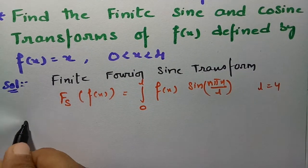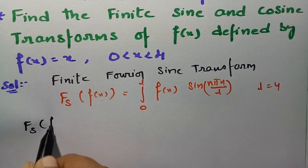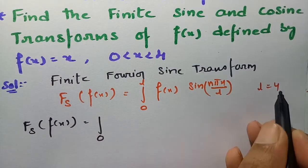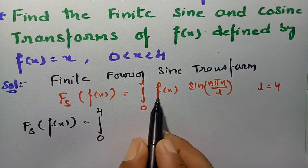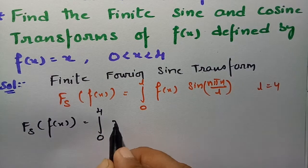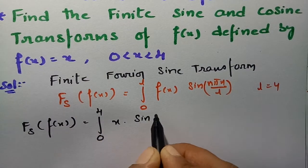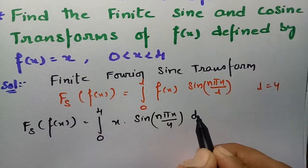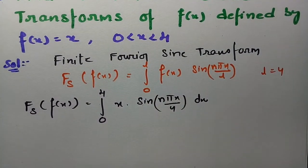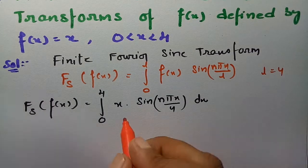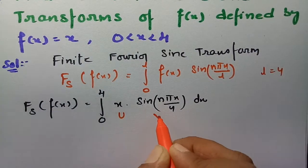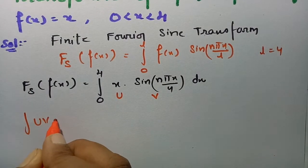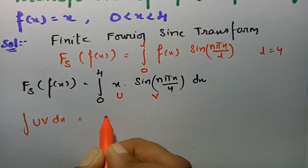Substituting, the finite Fourier sine transform of f(x) is equal to the integral from 0 to 4 of x times sin(nπx/4) dx. This is integration by parts — we treat x as u and sin(nπx/4) as v. The formula for integral of uv dx is: u leave as is, times integral of v, minus integral of (derivative of u times integral of v) dx.